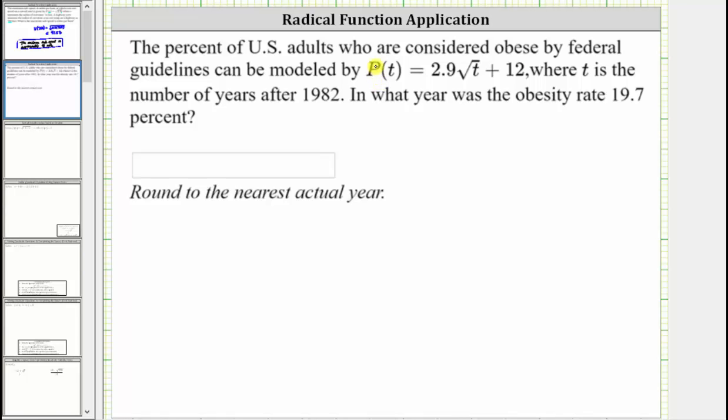The percent of U.S. adults who are considered obese by federal guidelines can be modeled by P(t) = 2.9√t + 12, where t is the number of years after 1982. In what year was the obesity rate 19.7%?